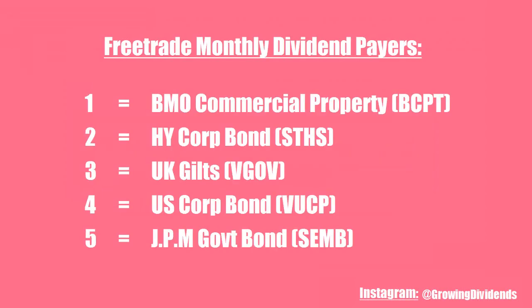On Freetrade there are five options for monthly dividend payers: BMO Commercial Property, HY Corporate Bond, UK Gilts, US Corporate Bond and JPM Government Bond. There will be other monthly dividend payments on other platforms such as Trading212, where there's Realty Income.